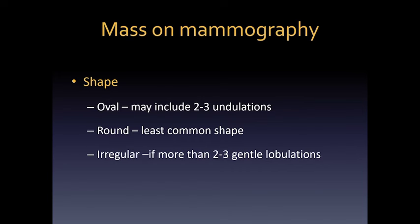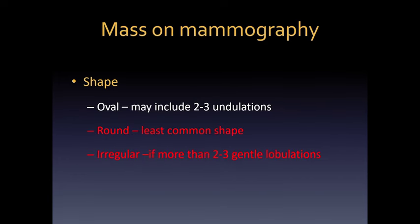If it's round, this is the least common shape — we have to be worried about it. If it's irregular, it's defined as having more than two or three gentle lobulations. Round and irregular shapes are more likely associated with malignancy than oval shape.